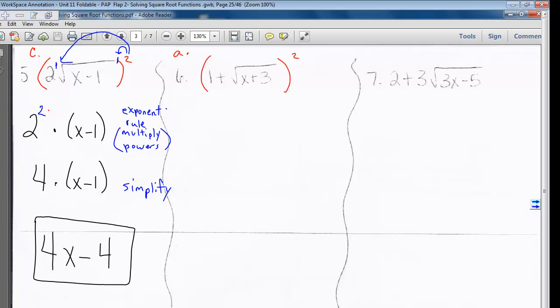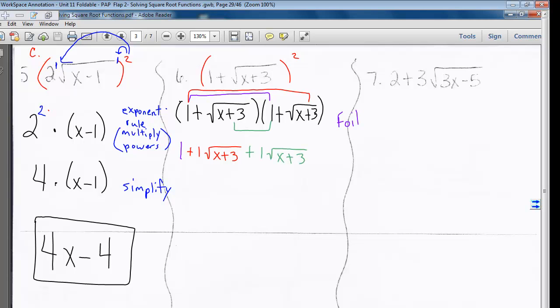Example 6 is a type A problem. 1 times 1 times 1 is 1. 1 times the square root of x plus 3, plus 1 times the square root of x plus 3, plus the square root of x plus 3 squared. When I combine like terms, I get 1 plus 2 times the square root of x plus 3 plus the square root of x plus 3 squared.